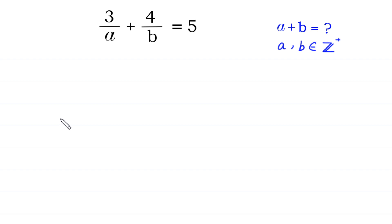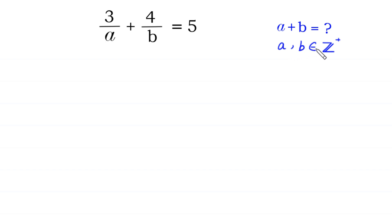Hello, welcome to how to solve this very nice equation. 3 over A plus 4 over B is equal to 5. We need to find all possible values of A plus B, where A and B are positive integers.